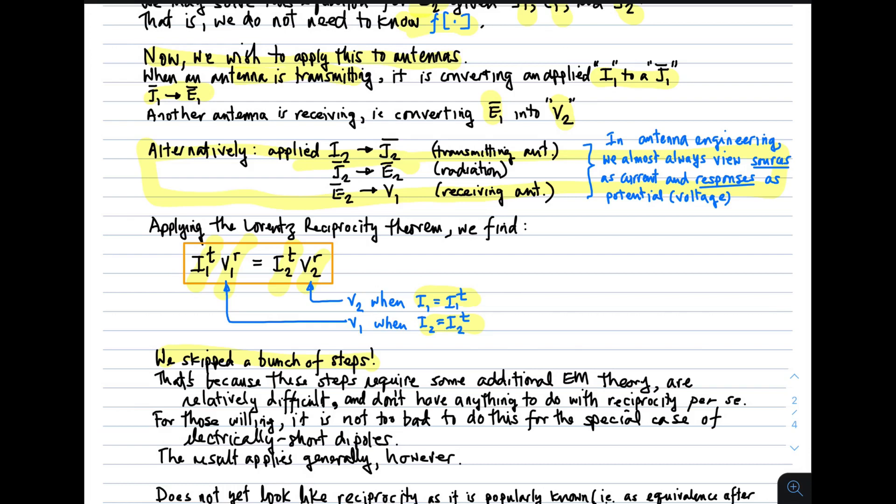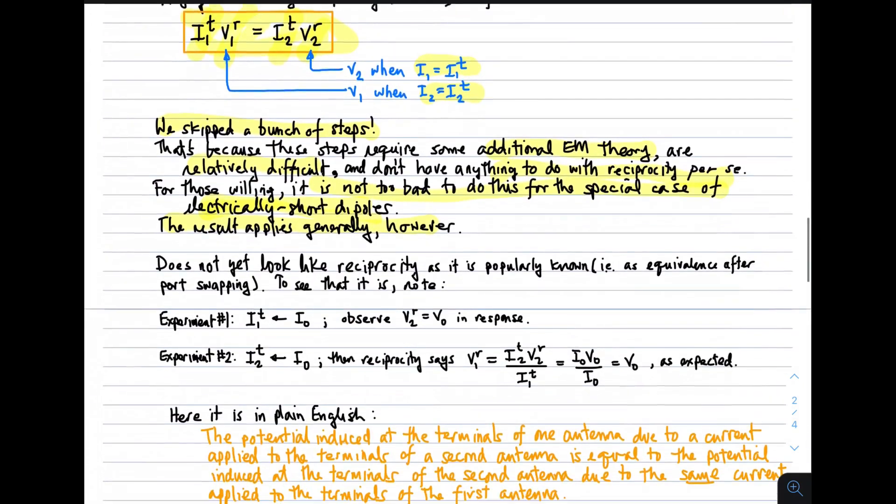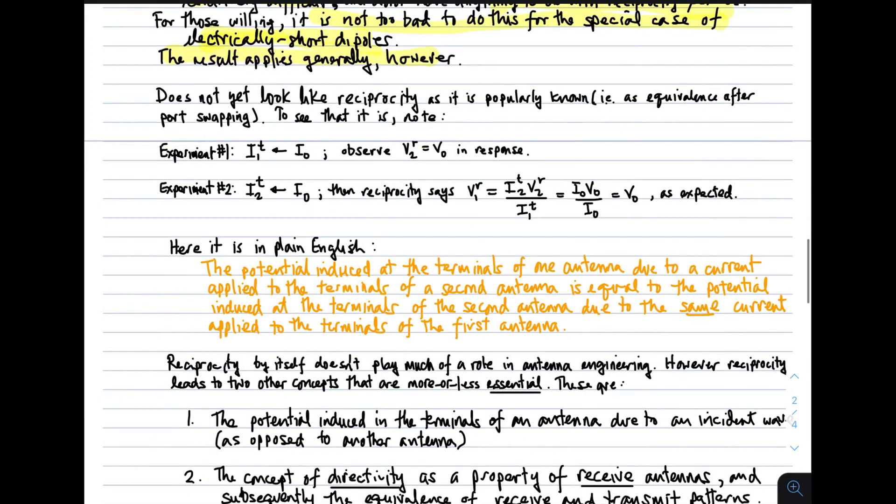Now, we've skipped a whole bunch of steps getting from that integral to this simpler version, but they're pretty straightforward. I'm skipping the steps here because it requires a little bit of additional EM theory. And if you're willing, it's not too bad to do this for the special case of electrically short dipoles. And that derivation commonly appears in textbooks, and it's pretty easy to follow. So, this doesn't yet look like reciprocity, as it is popularly known. That is, when people talk about the equivalence of linear systems, they normally are referring to equivalence in some sense after port swapping. In other words, it doesn't matter.